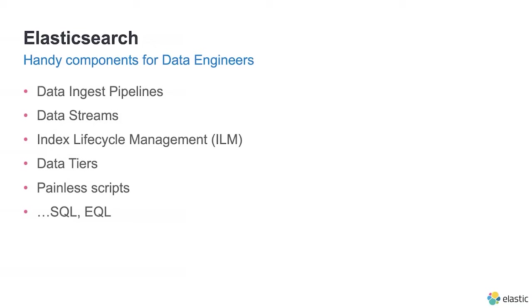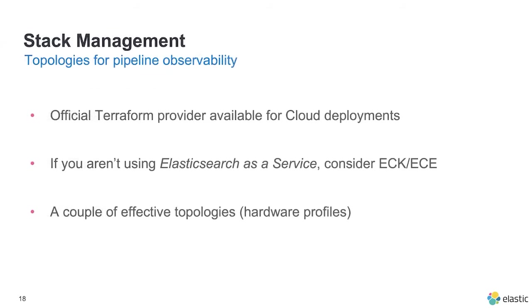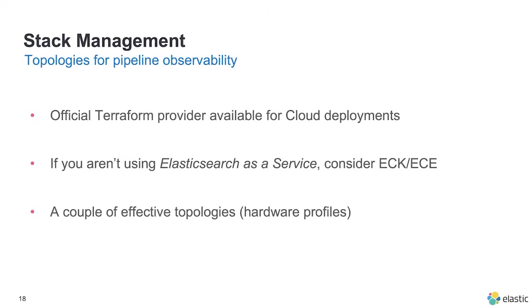Elasticsearch is a search engine that runs distributedly and is great for putting in logs and all sorts of things. Handy components include data ingest pipelines, data streams, index lifecycle management, data tiers, Painless scripts, and DSLs such as SQL and EQL, which we all use on the data engineering team here at Elastic. Stack management is always a good first place to stop and think: is my topology right? At a previous workplace, we ran a hot-hot architecture and put in billions of events a day, and we needed to revisit our topology as things grew. If you're using Elastic Cloud for deployment, consider looking at the official Terraform provider to store your configuration scripts in your repo.